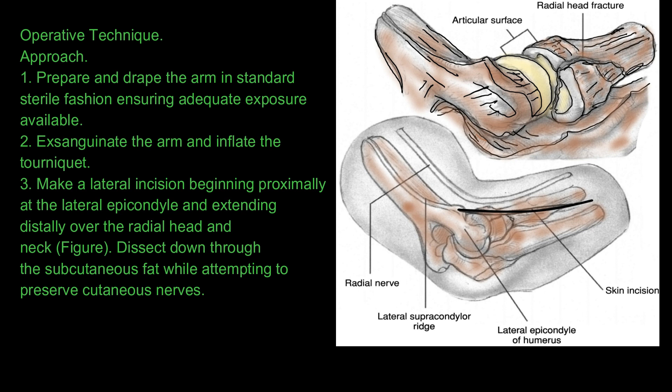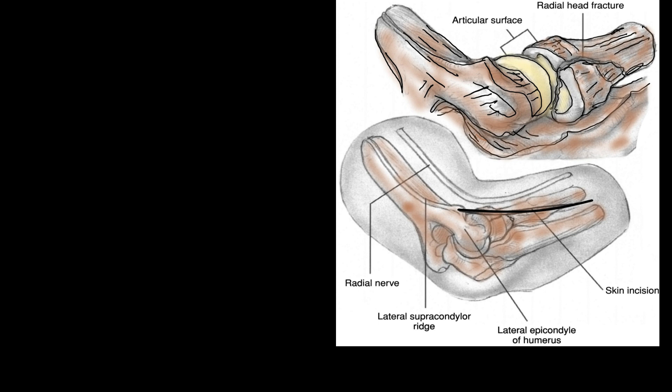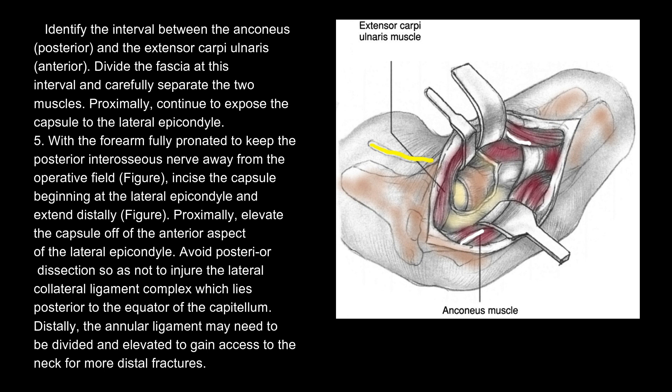Surgical procedure: 5. Prepare and drape the arm in standard sterile fashion ensuring adequate exposure. 6. Exsanguinate the arm and inflate the tourniquet. 7. Make a lateral incision beginning proximally at the lateral epicondyle and extending distally over the radial head and neck. 8. Dissect down through the subcutaneous fat while attempting to preserve cutaneous nerves. 9. Identify the interval between the anconeus (posterior) and the extensor carpi ulnaris (anterior), divide the fascia at this interval, and carefully separate the two muscles.